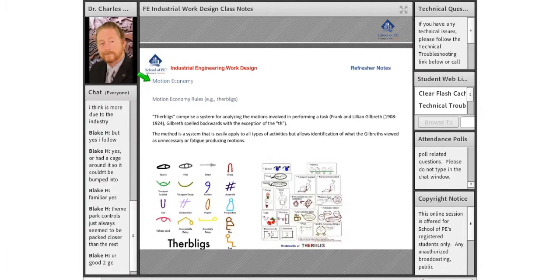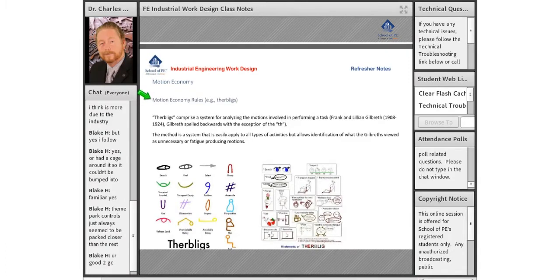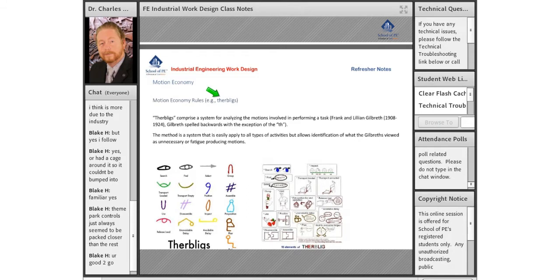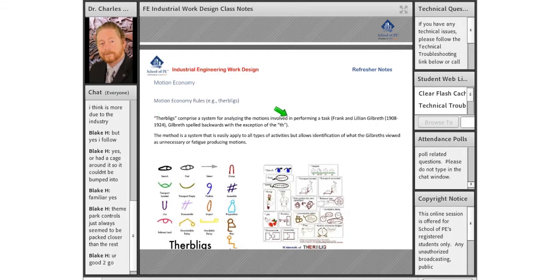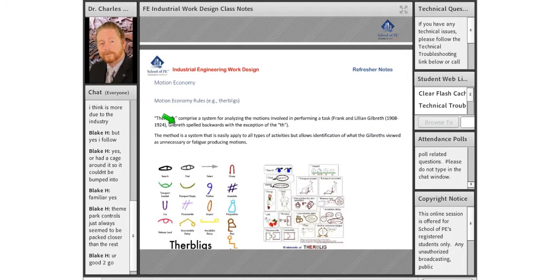When we were looking at motion economy, the motion economy rules, for example therbligs, comprise a system for analyzing motions involved in performing tasks. As the story goes, it was their name spelled backwards except for the TH, and it dates all the way back to the 1920s.